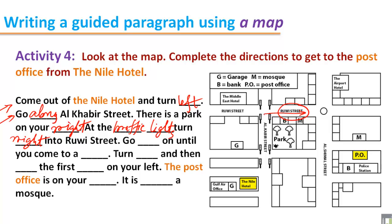Now read the sentence: go on until you come to a — if you want to go to the post office, you will have to come up to the roundabout. So we write: go straight on until you come to a roundabout. This is the roundabout on the map.